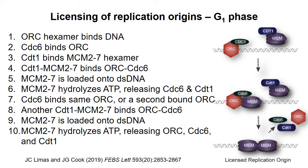Then, an ATP hydrolysis event causes CDC6 and CDT1 to dissociate. A second CDC6 binds, either at the ORC-MCM complex or at a second ORC that is bound nearby. CDT1 brings a second MCM complex, which is also loaded onto the DNA. The MCM complexes are touching each other at the origin. After the two MCM complexes have been loaded, the other proteins dissociate, and the origin is now said to be licensed.